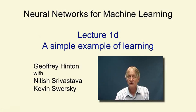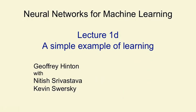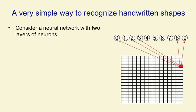In this video, I'm going to show you an example of machine learning. It's a very simple kind of neural net, and it's going to be learning to recognize digits. You're going to be able to see how the weights evolve as we run a very simple learning algorithm for training a very simple network to recognize handwritten shapes.